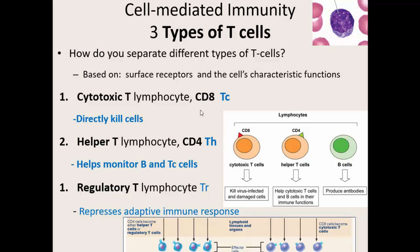The helper T cells — one of the CD4 cells — help monitor B cells and cytotoxic cells. Sometimes T cells can get a little overactive, so helper T cells help monitor their production and how many there are, because we don't want too many or they might start to kill uninfected cells. Our regulatory T lymphocytes repress our adaptive immune response, keeping cytotoxic cells from trying to fight off uninfected cells or normal body cells. We need to be able to recognize normal uninfected cells and keep them alive while targeting infected cells.